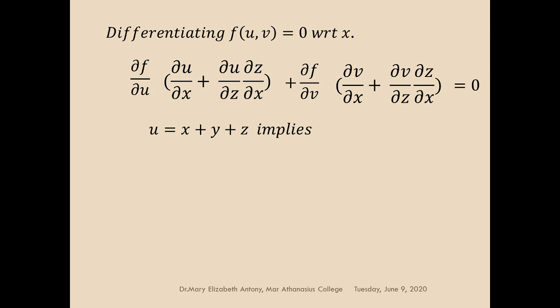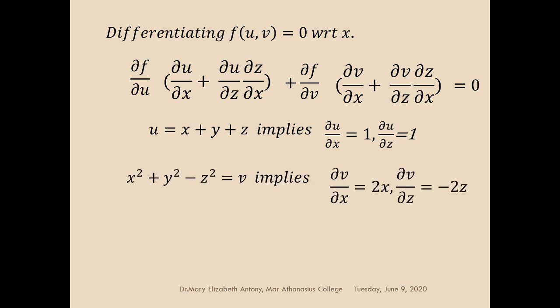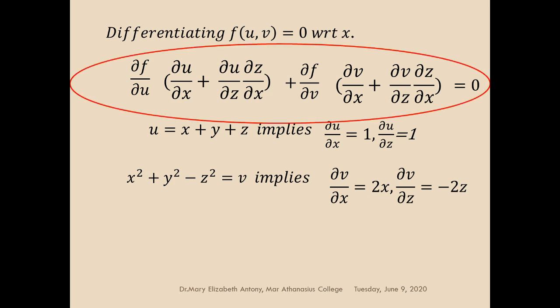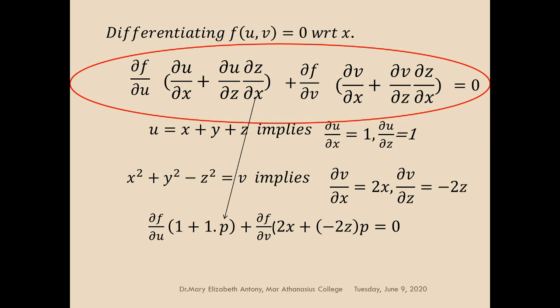Since u equals x plus y plus z, dou u by dou x equals 1 and dou u by dou z equals 1. From v equals x squared plus y squared minus z squared, dou v by dou x equals 2x and dou v by dou z equals minus 2z. Substituting, we have dou f by dou u into 1 plus 1 into p — where p is dou z by dou x — plus dou f by dou v into 2x plus minus 2z into p, equal to 0. This is the first equation, named A.